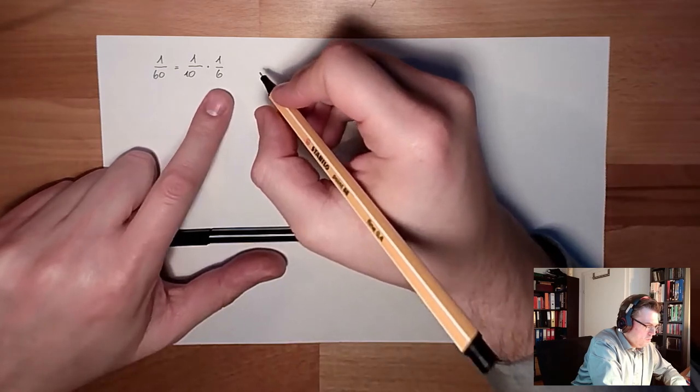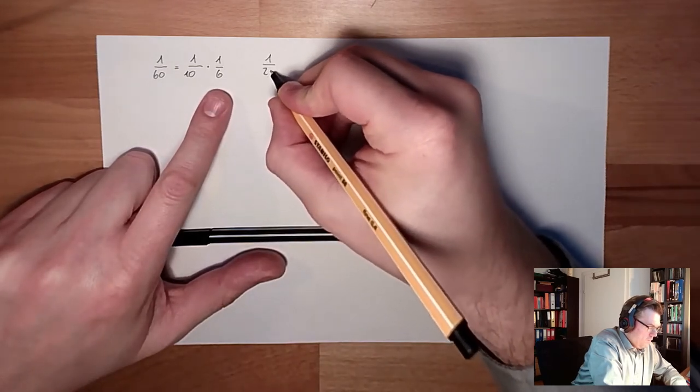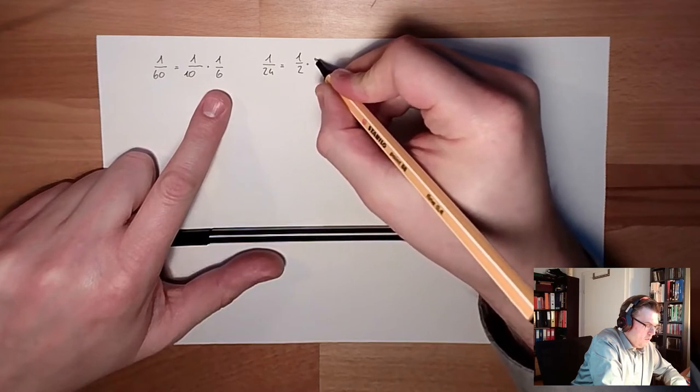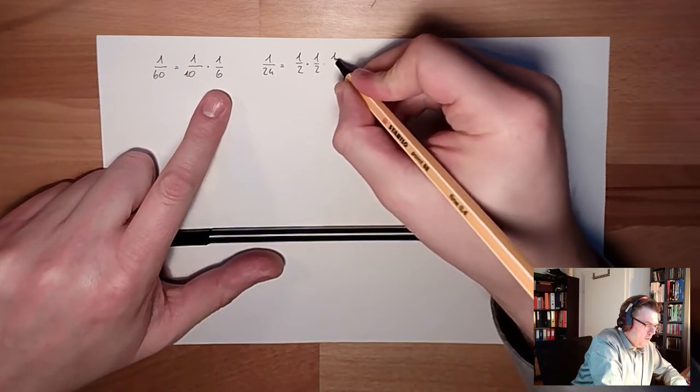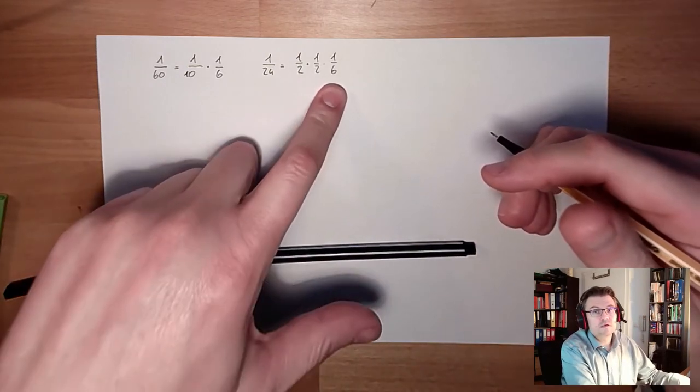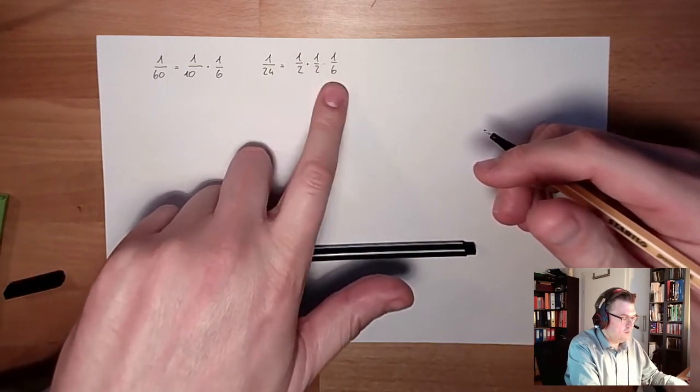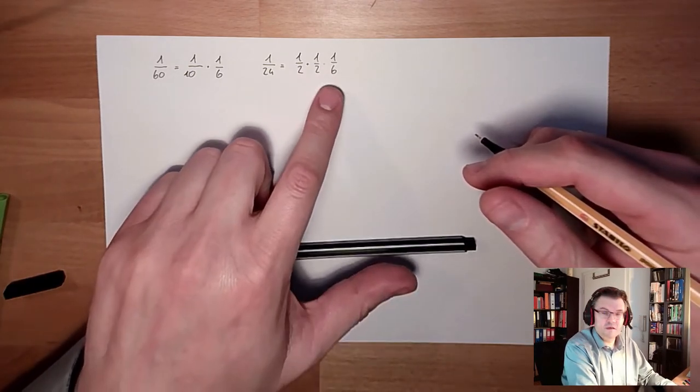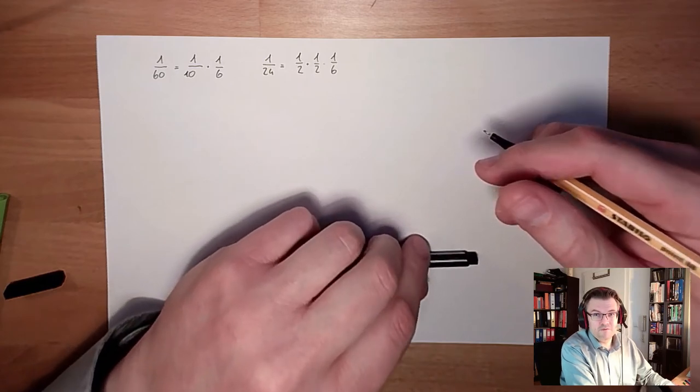And 1/24th is 1 divided by 2 multiplied 1 divided by 2 multiplied 1 divided by 6. Ta-da! 6.